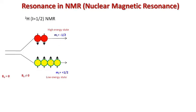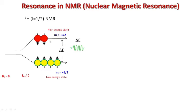According to the Boltzmann distribution law, more nuclei are present in the low energy state compared to the high energy state. When a pulse of energy ΔE is applied to the system, and if ΔE is exactly equal to the energy difference between the high and low energy states, then the nuclei in the low energy state will absorb this radiation.